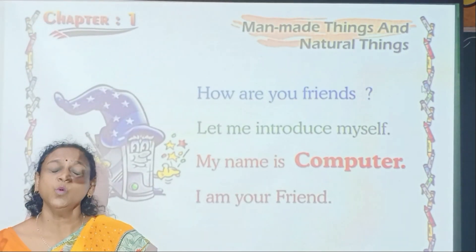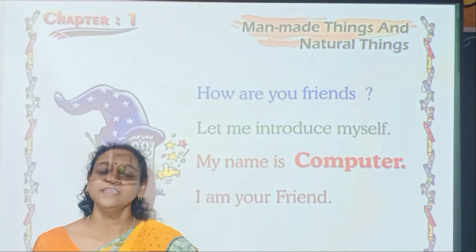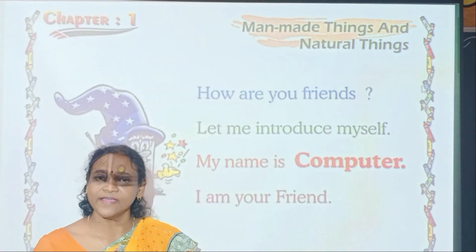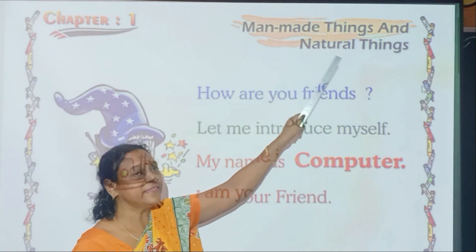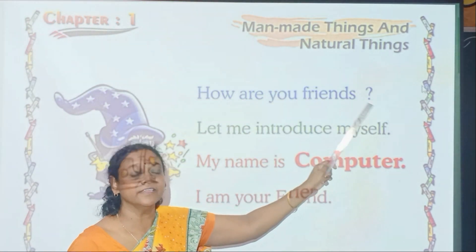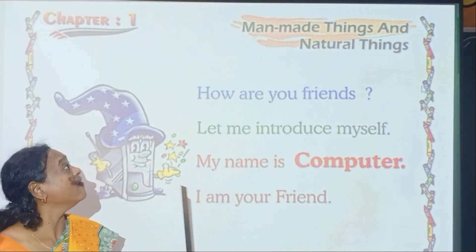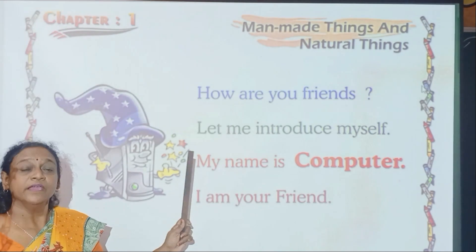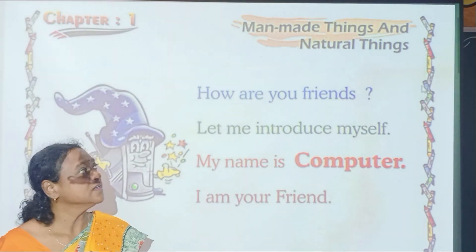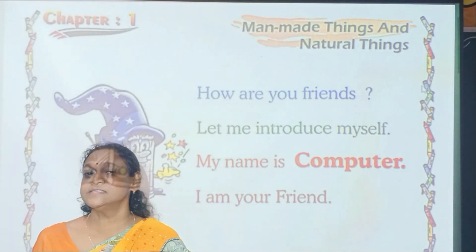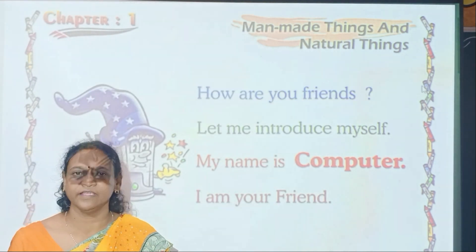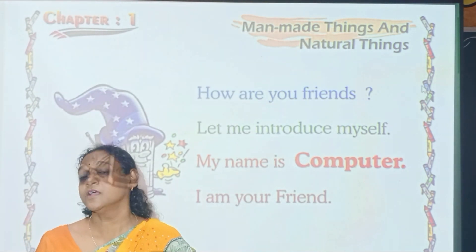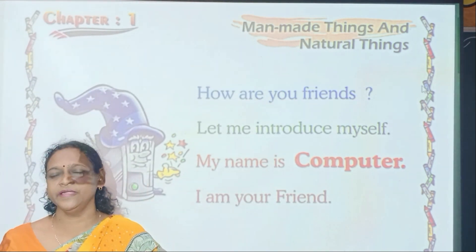Okay children. Now we will study computer chapter number 1. What is this? Man-made things and natural things. This is our chapter number 1. In this, we are going to see what is man-made things and what is natural things. So natural things means God-made things.